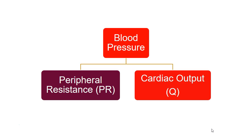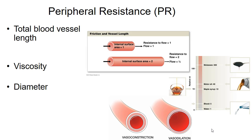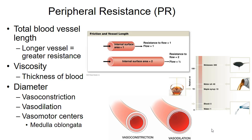Blood pressure is a combination of cardiac output and peripheral resistance. Peripheral resistance involves the length of the vessels, the viscosity of blood, and most importantly, the diameter of blood vessels. If you double the radius, you decrease resistance by a factor of 16 — resistance is inversely proportional to the radius to the fourth power. Changing the diameter of blood vessels has a huge impact on peripheral resistance. The body controls blood pressure through peripheral resistance by changing the diameter of resistance vessels — the arterioles.